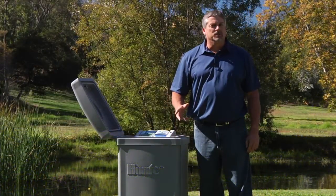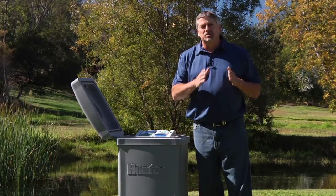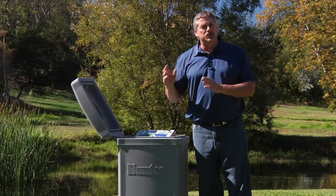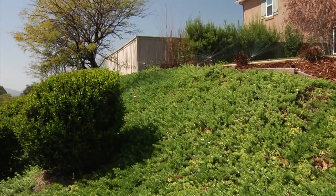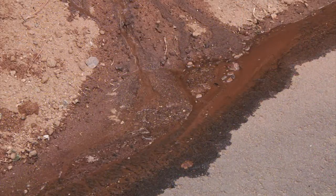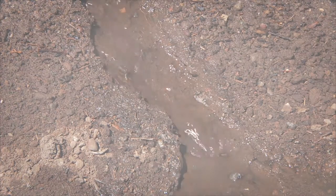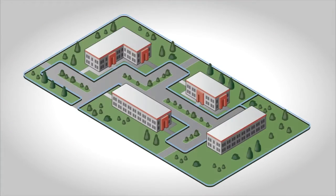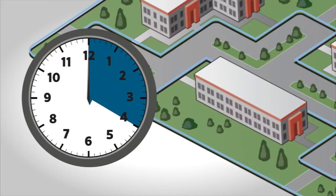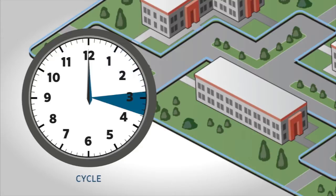The next function we'll talk about is cycle and soak. This feature allows you to divide up your station's total runtime into multiple shorter cycles. This is useful for zones with slopes or tight soils because it allows the soil to absorb the water, helping prevent runoff or puddling. For example, if you have a zone with 20 minutes of runtime but water starts to run off before five minutes has elapsed, you might want to run your 20 minutes over five four-minute cycles.